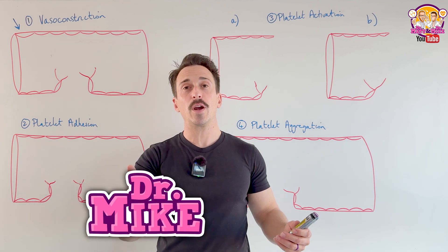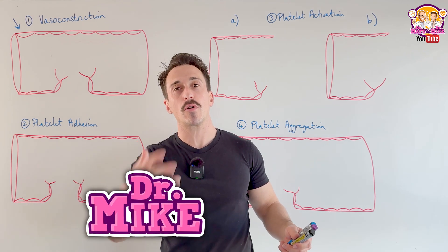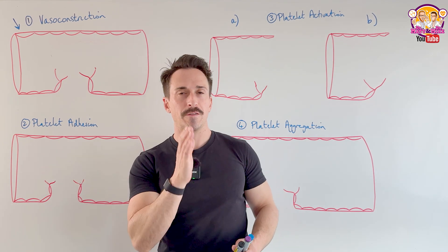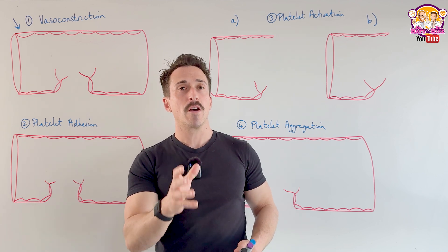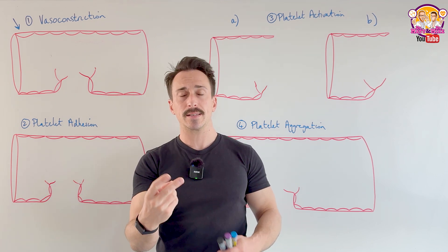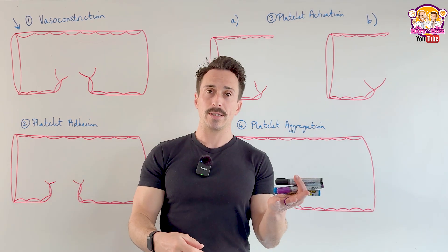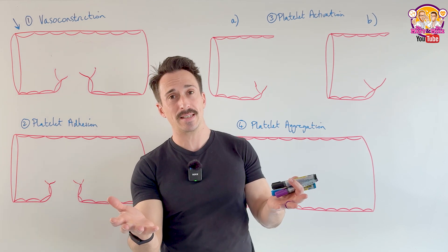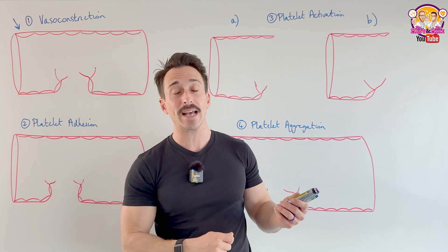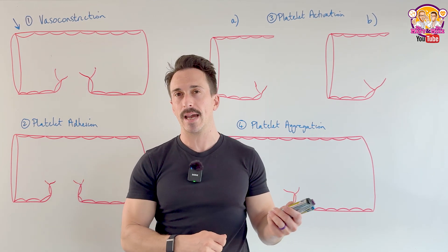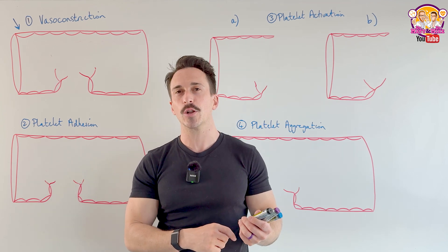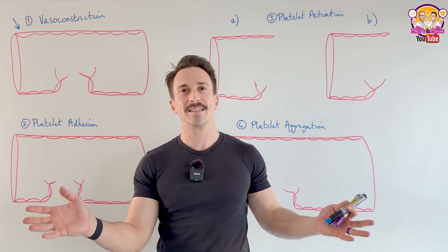Hi everyone, Dr. Mike here. In this video, we're taking a look at the process of primary hemostasis. This is the first step involved in stopping us from bleeding out. There are two steps in hemostasis: primary hemostasis and secondary hemostasis. I've done a video on secondary hemostasis, also known as the clotting cascade — I suggest you watch that after this video — but let's take a look at primary hemostasis.